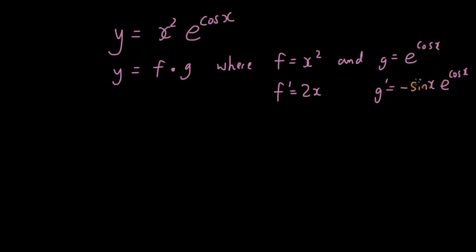So if you don't know how I did that, please have a look at my previous tutorial on differentiating composite functions with exponential functions. So let's now substitute those into my product rule formula: f times g dash plus g times f dash. Put them into that formula: x squared times negative sine x e cosine x plus e to the power of cosine x times 2x.